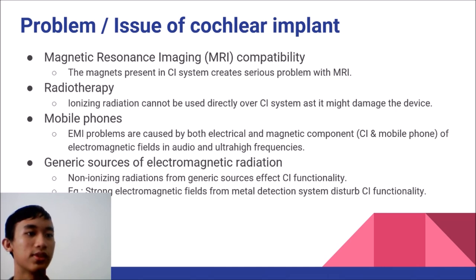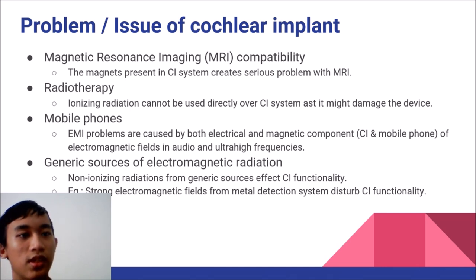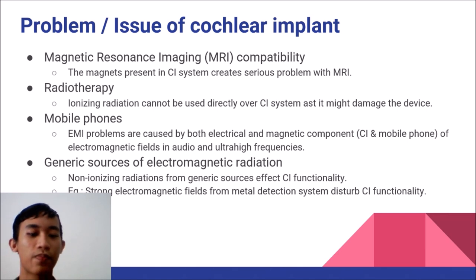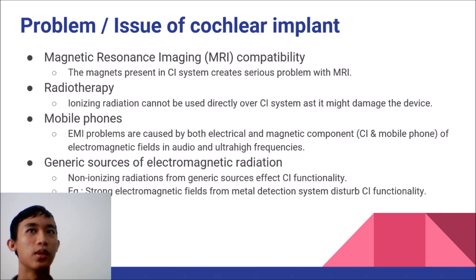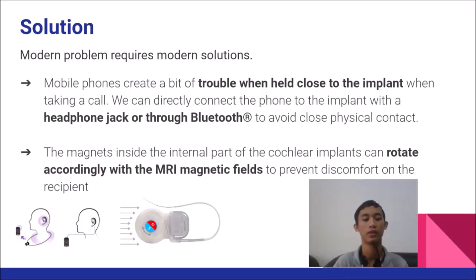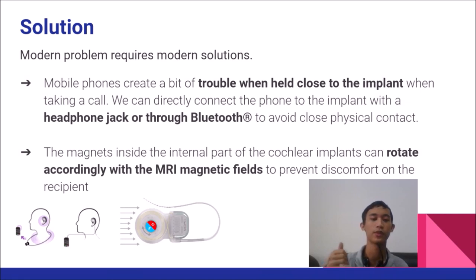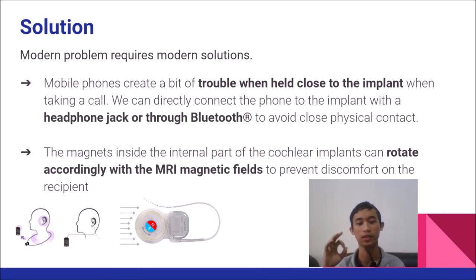Next, there are generic sources of electromagnetic radiation, such as TSA security gates, which will probably interfere with the implants. Moving on to mobile phones: when you bring a mobile phone close to the inner part of the implant there is going to be some interference and incompatibility.